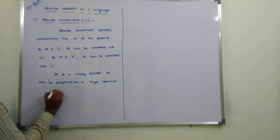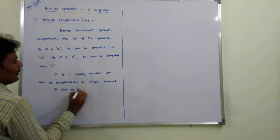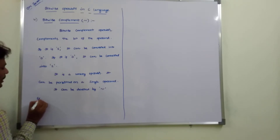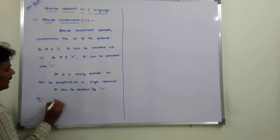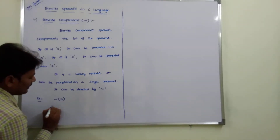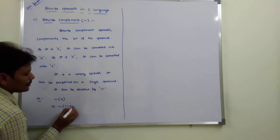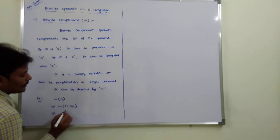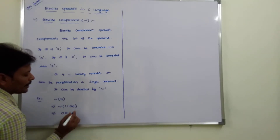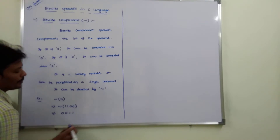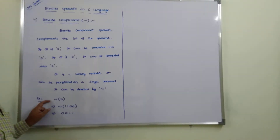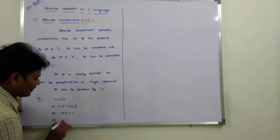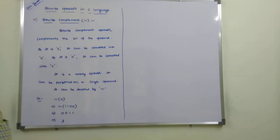It is denoted by the complement symbol. For example, the bitwise complement of 12 — that is, the complement of 1 1 0 0. Complement of 1 is 0, complement of 1 is 0, complement of 0 is 1, complement of 0 is 1. So after performing the complement operation on the operand 12, the result is 0 0 1 1, which is 3. This is the bitwise complement operation.